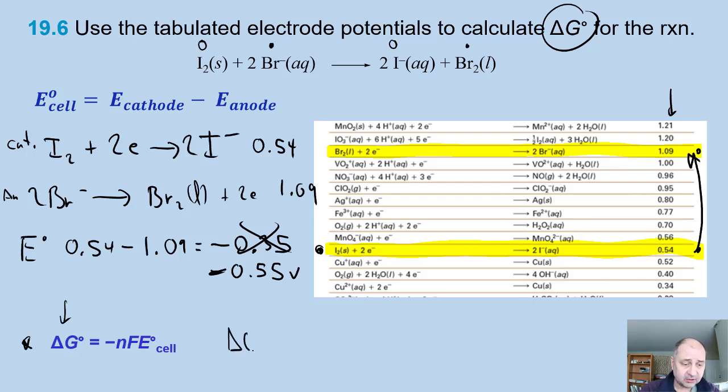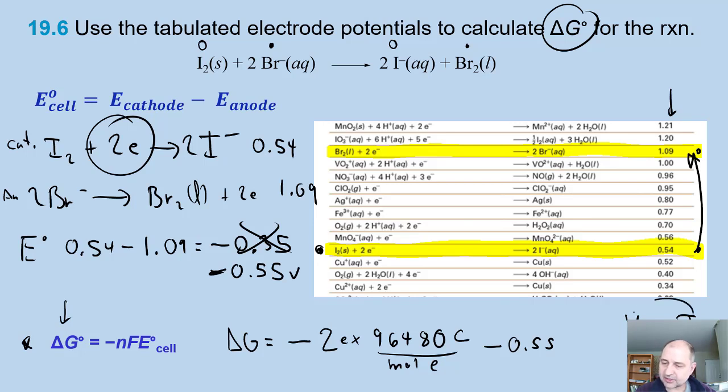So ΔG is going to be equal to negative, and n in this case is 2 because we have 2 electrons here, and that's important. So we have 2 times Faraday's number, which is 96,485 coulombs per mole per electron. Then we multiply by the electron potential, which is negative 0.55. If you remember, a volt is equal to a joule per coulomb, those are interchangeable.